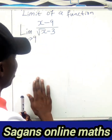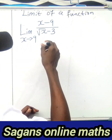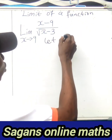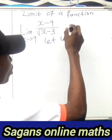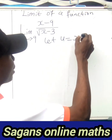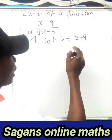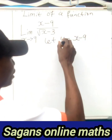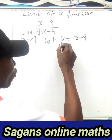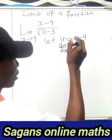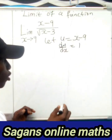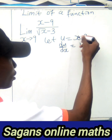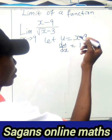Now let me use another method — Method 2. Let u equal the numerator, that is u equals x minus 9. Differentiating u with respect to x: du/dx equals 1, because the derivative of a constant is 0 and the derivative of x is 1.